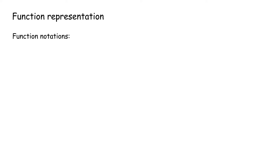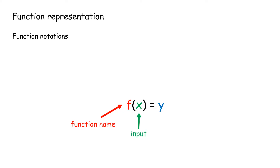Function representation and notation: We represent a function with the letter f, called the function name. The relation is denoted by y equals f(x). The element x is known as the input, or domain of the function, and y is known as the output, or range — the image of x.